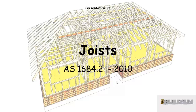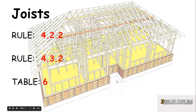Good day and welcome back to Buildsum. This is the 27th presentation on the Timber Framing Code, and this one is going to be on joists. The rules associated with joists are 4.2.2 and 4.3.2, and the table we need for this particular example is Table 6.